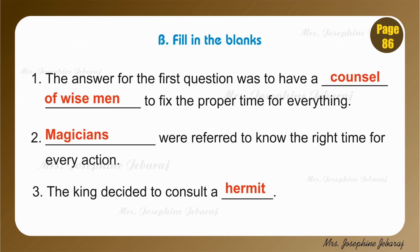Moving to B, filling the blocks. Number 1. The answer for the first question was to have a blank to fix the proper time for everything. We learned in the lesson that learned men in the kingdom advised the king to have a council of wise men to fix the proper time for everything. So the answer is: council of wise men.